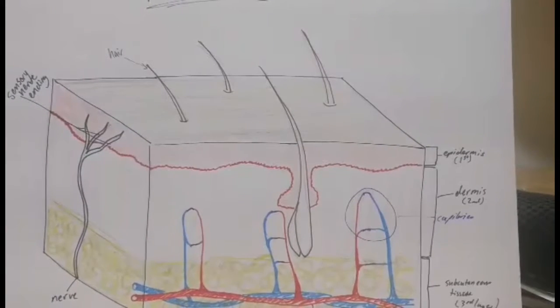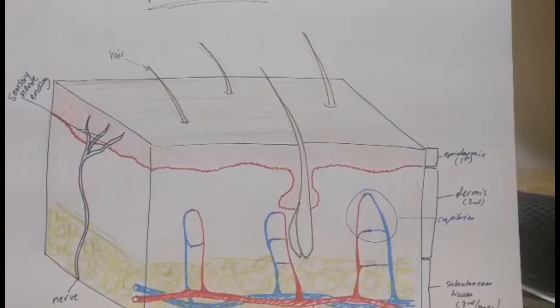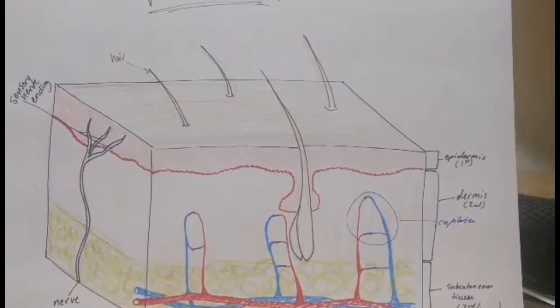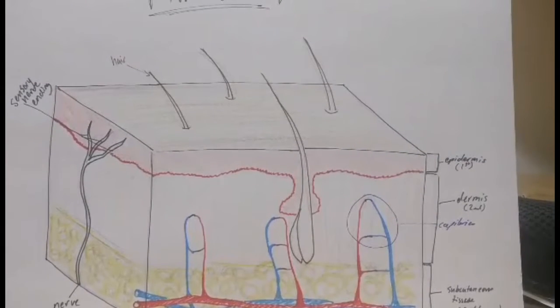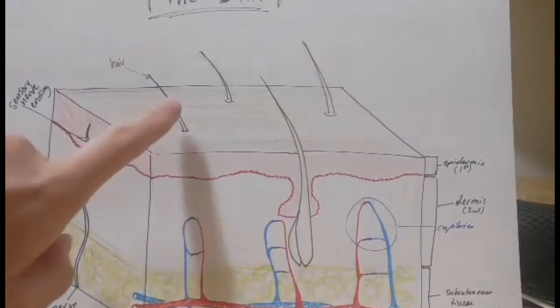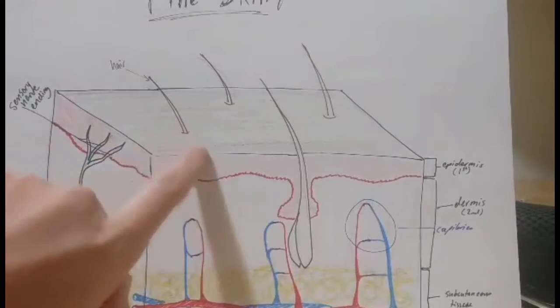With abrasions and scrapes, it's mostly just the first or second layer. With cuts, they go into the first, second, or third layer, but we're only going to be talking about relatively minor cuts that go into these first top two layers.